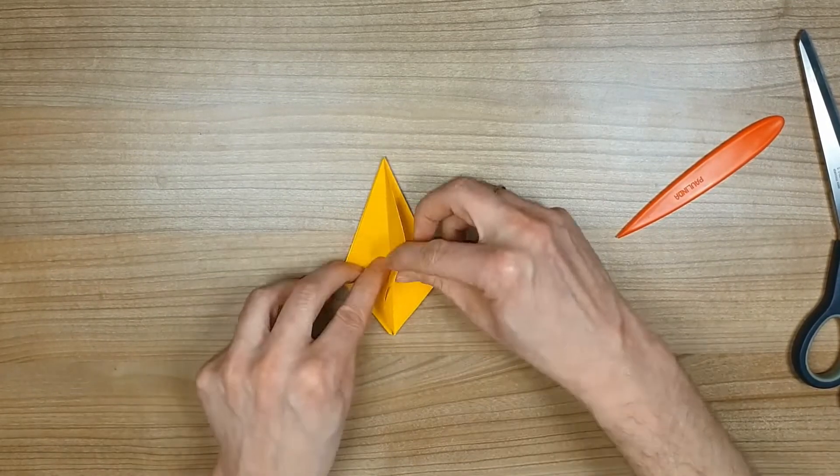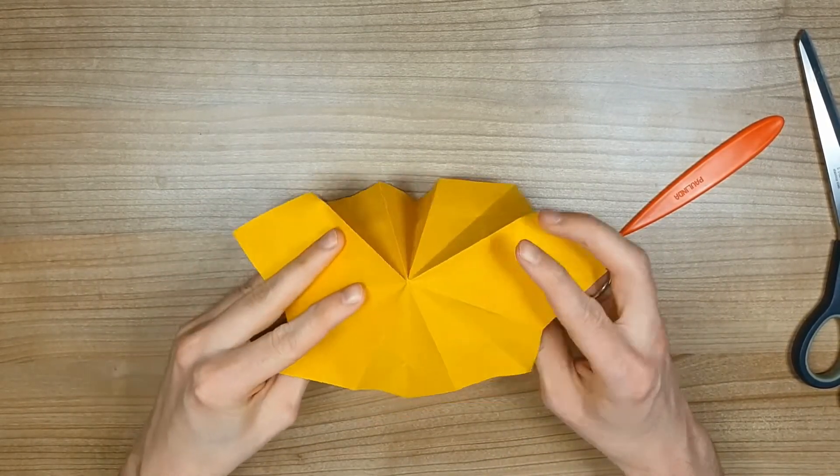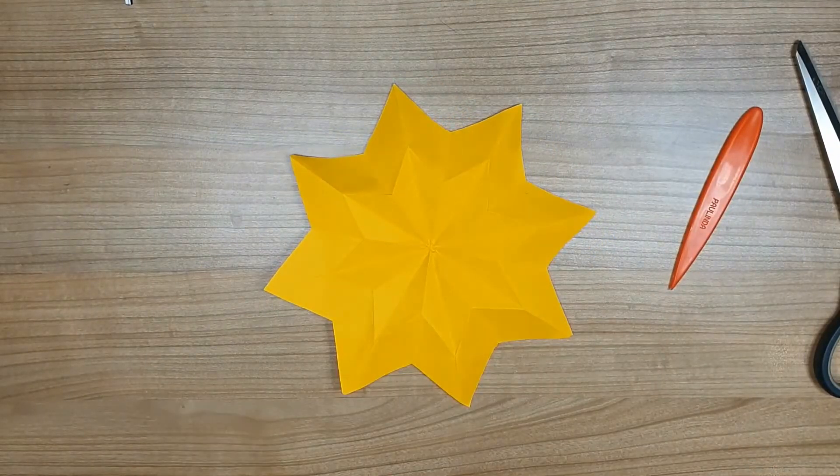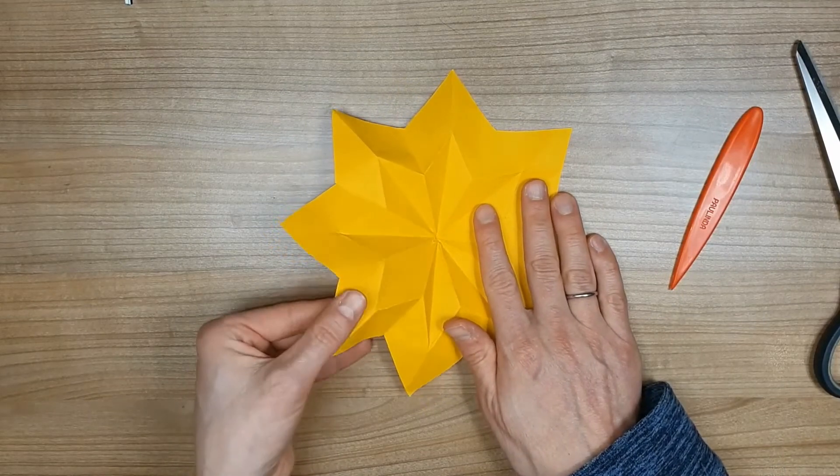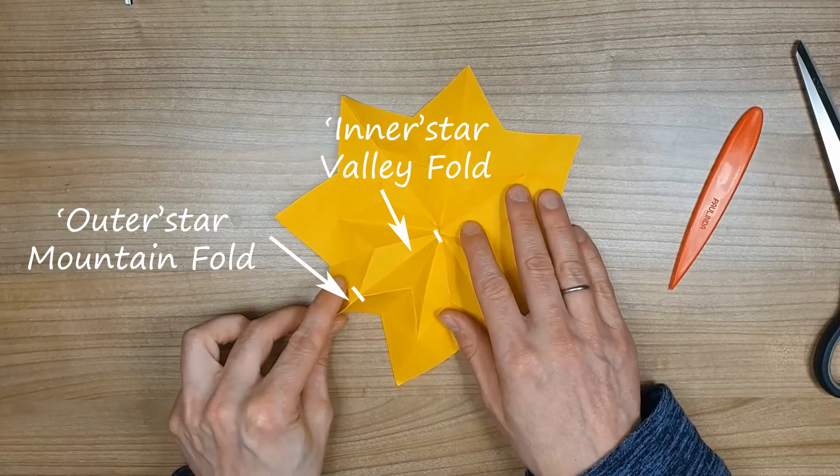When you finish this, open up the paper and you see the star shape emerge. To finalize the inner star shape, fold the point of the star downwards and make sure the outer star has a mountain shape and when you follow the line towards the center, the part of the inner star should have so called valley fold.